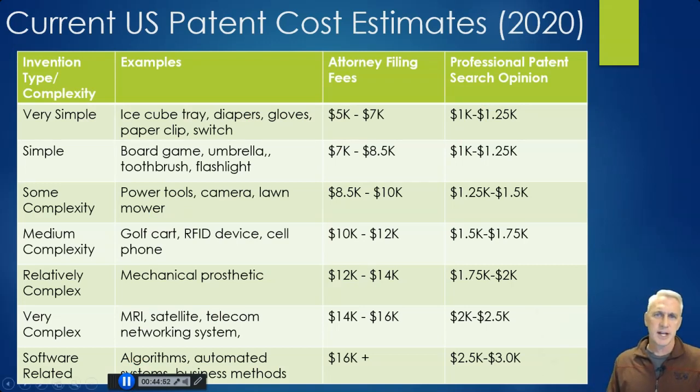Current costs. And these were latest from various different sources. Also varies a little bit by state to state depending upon how much attorneys are charging. You could have a very simple, very limited complexity patent like an ice cube tray, gloves, diapers, a switch, paper clip. Attorney filing fees somewhere between five to seven thousand, professional patent search options. And this is basically you want to make sure that they're looking through that whole process to make sure that you didn't miss anything. That's probably worth it if you're going to go down the patent path. You could do your own but it always helps to have another second opinion of somebody who does this all the time. And so that's on the low end.